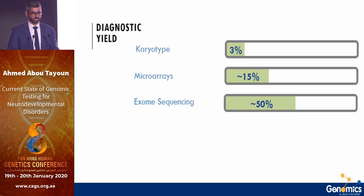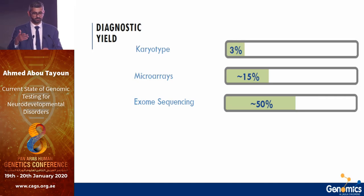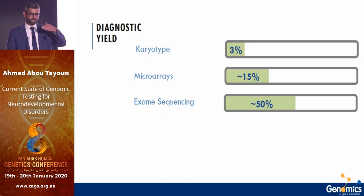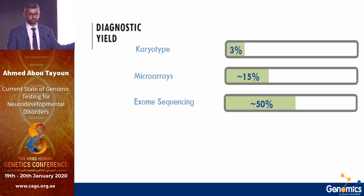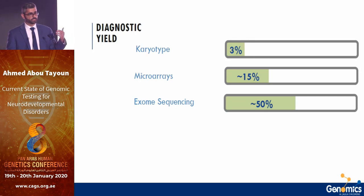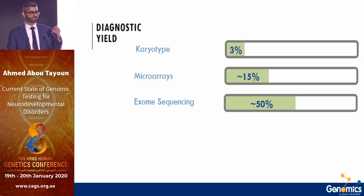Whole genome sequencing has advantages because it has no enrichment bias — you're sequencing both coding and non-coding DNA, so coverage is more uniform with coverage in deep intronic regions. You can develop bioinformatic tools to call structural variants and copy number variants in addition to sequence variants, potentially replacing karyotype, microarray, and exome sequencing in a single test. However, cost is still high, and deep intronic or regulatory variants identified by whole genome are still difficult to interpret functionally.